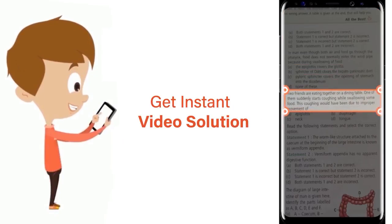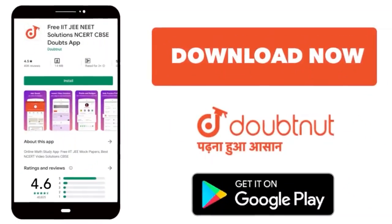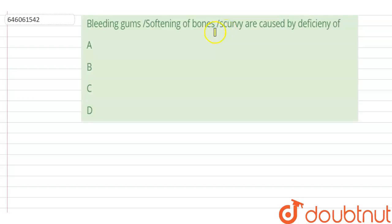Download Doubtnet app today. Hello students, your question is: bleeding gums, softening of bones, and scurvy are caused by deficiency of what? The options are A, B, C, D. The correct option is C, as bleeding gums, softening of bones, and scurvy are caused by deficiency of vitamin C.